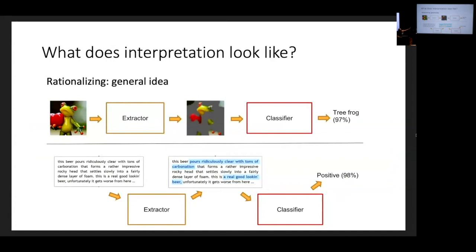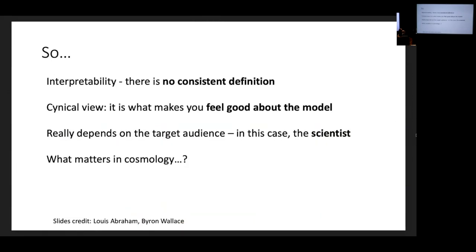There's another way to kind of understand what models do is to give prototypes, so give examples - these are dogs, this is the thing that the model would call dogs. And then also criticism, what the model can't do. Rationalizing - you extract the piece of the data that prompts the answer. So to finish this off, my piece is that this interpretability is kind of in a pre-paradigmatic state in the sense that there is really no consistent definition of that notion of interpretability that people all agree on. And the cynical view would be that it's what makes you feel good about your model in the end. It really depends on the target audience. In this audience, I think it's the scientists that should decide what it is that they care about when they want to make a model, which of these many techniques they actually want to apply. And in particular, one should think what matters in cosmology. And with this, I'll pass it on to Vanessa.